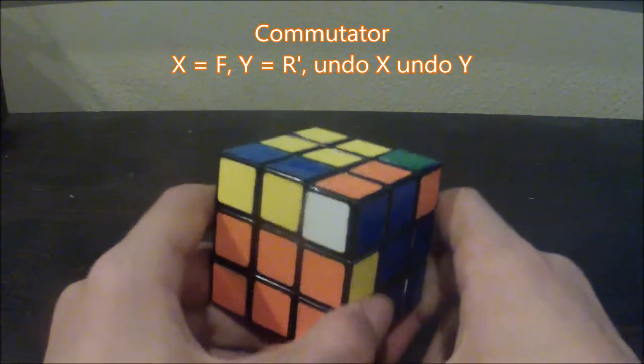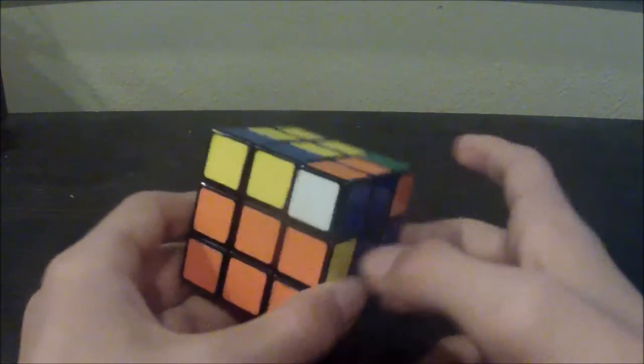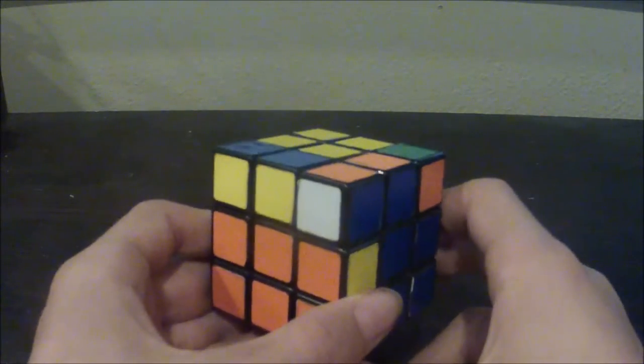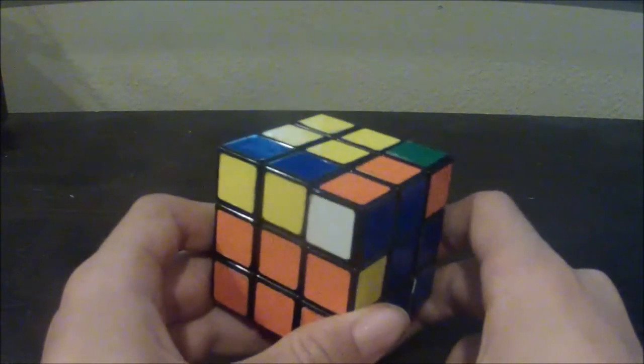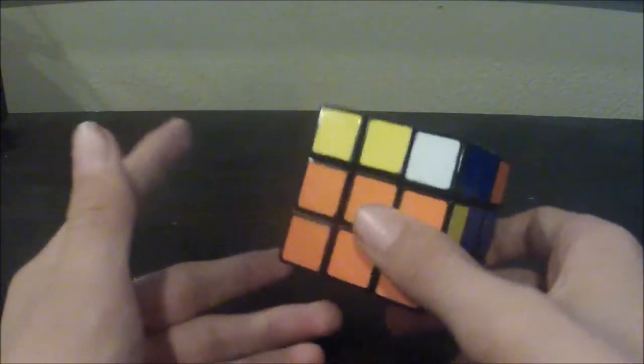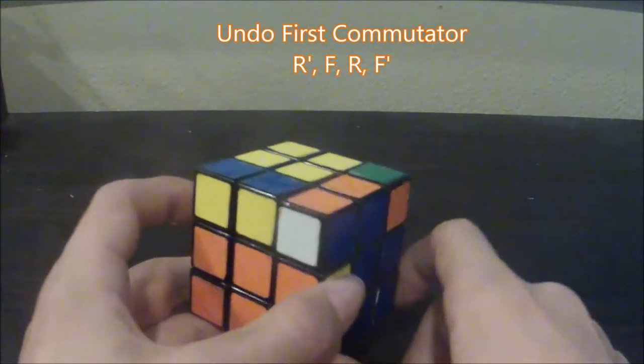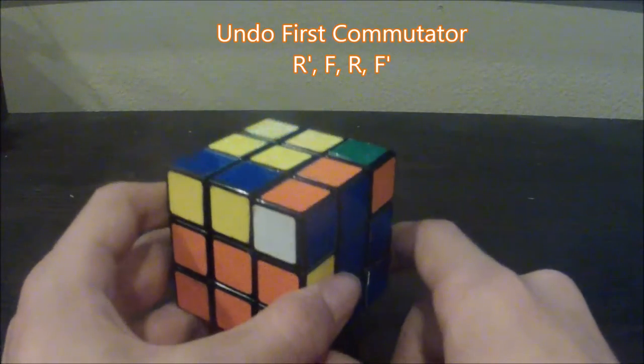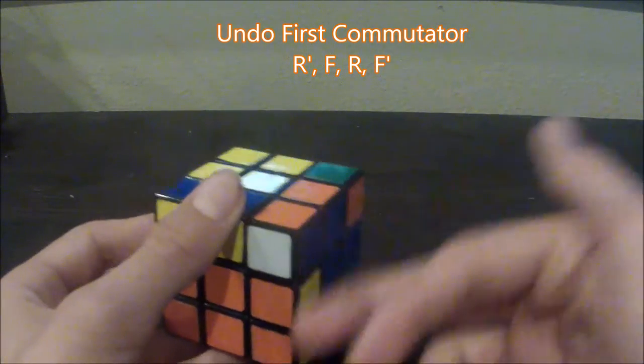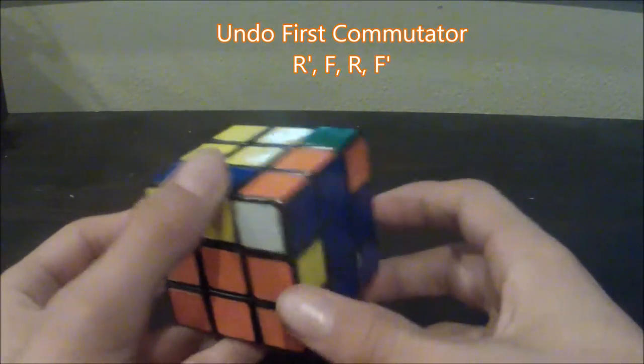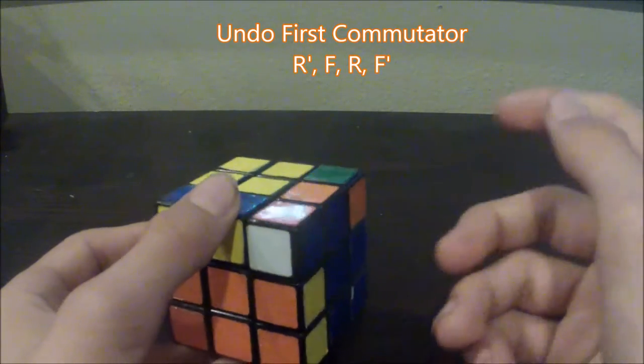In this example, I only want to move corner pieces around. How can I do that from this position? Well, the best way to understand how to do that is to undo the commutator we've already done. As you can see on the top of the screen, the commutator we did is front, right counterclockwise, front counterclockwise, then right clockwise.